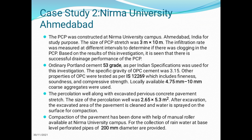This is Case Study 2, carried out at Nirma University, Ahmedabad. Permeable concrete pavement (PCP) was constructed at Nirma University campus, Ahmedabad, India for study purposes. The size of the PCP stretch was 3 meters by 10 meters. The infiltration rate was measured at different intervals to determine if there was clogging in the PCP. Based on results, there was successful drainage performance of the PCP. Ordinary Portland Cement 53 grade as per Indian specifications was used, with a specific gravity of 3.15. Other properties were tested as per IS 12269, including fineness, soundness, and compressive strength.